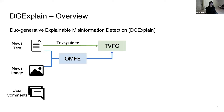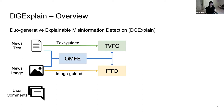Second, the TVFG module is a text-guided visual feature generator that aims to effectively generate comprehensive visual information by reading the news text. We also have the ITFD module, which does the similar thing in the other direction — it is an image-guided textual feature decoder that generates corresponding textual features from the encoded news image.